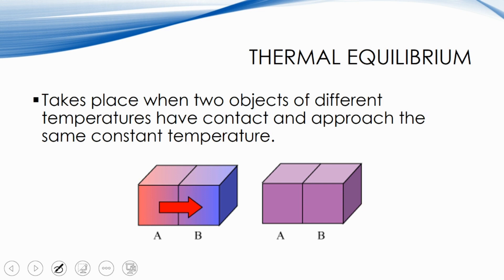Thermal equilibrium is the idea that whenever there is contact between two different objects — really between a system and a surrounding — heat will flow from the area of high temperature to lower temperature. On screen I have two blocks A and B: hot is represented in red, cold in blue, and the arrow shows heat transferring from A to B.